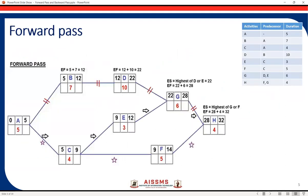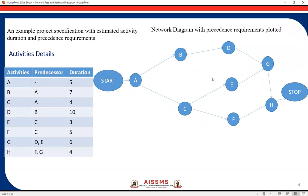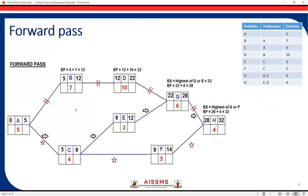We have already seen the node structure. The same network diagram is drawn here with the different node structure. In the node structure we have the activity name and the duration, and in this forward pass we have to calculate the early start and early finish for all activities. We start with the first activity. Since no start date is given, we'll assume it as zero. So the early start for the first activity is assumed as zero.